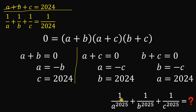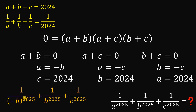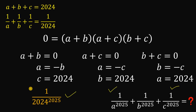Using these three cases, we can now evaluate the expression. If A equals negative B, we replace A with negative B. Since 2025 is an odd power, negative B raised to the 2025 gives a negative value, so 1 over A to the 2025 plus 1 over B to the 2025 equals 0. The expression then reduces to 1 over C raised to the power of 2025. Since C equals 2024, we get 1 over 2024 raised to the power of 2025. The same result holds for the second and third cases.